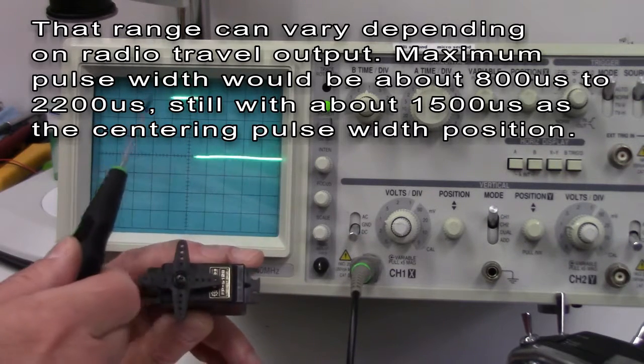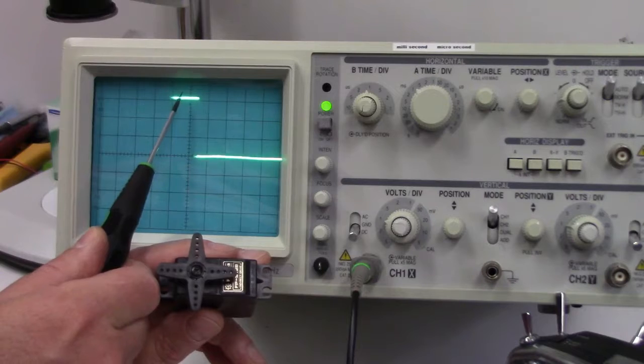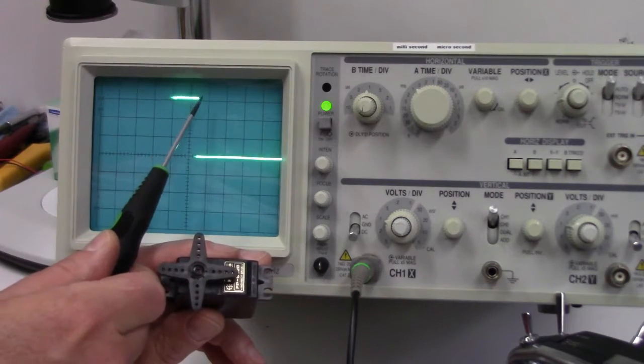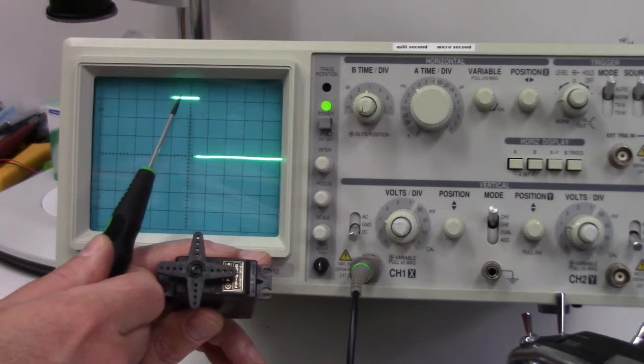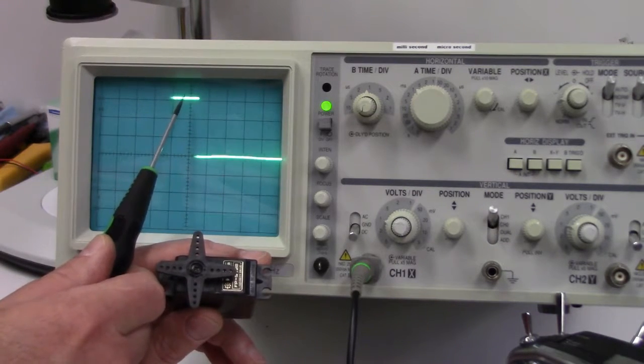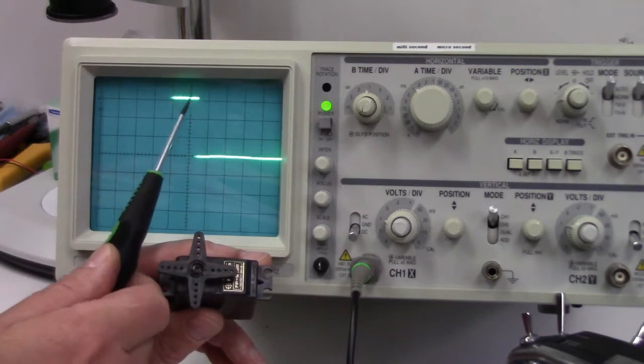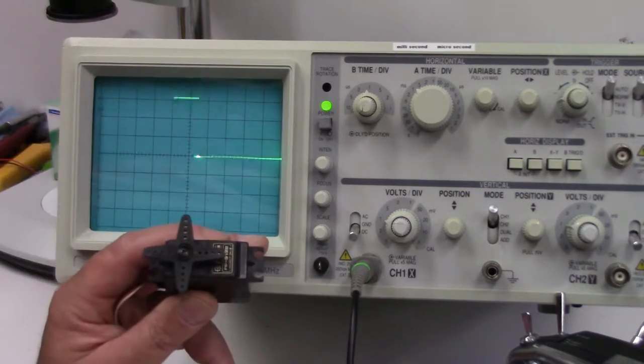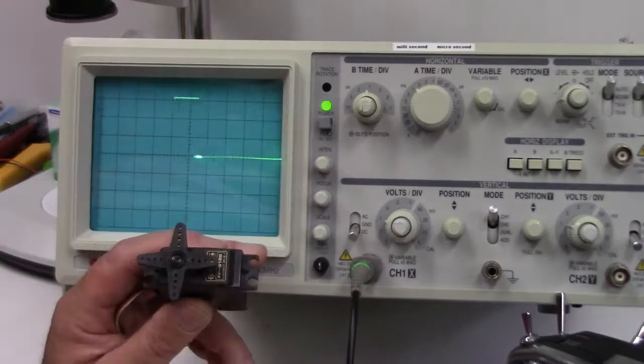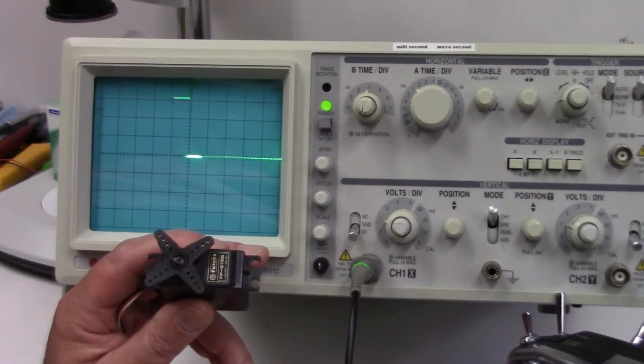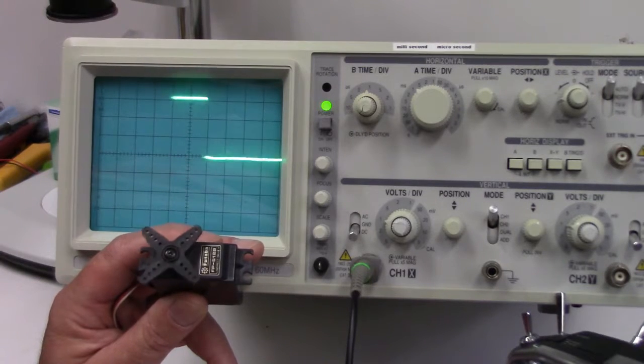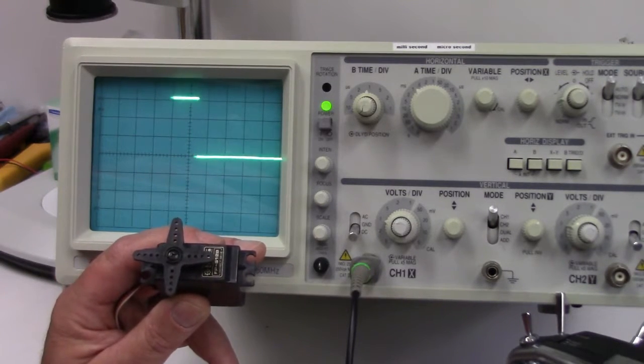So at this scale, we'd expect to see that line basically go between the full travel of that block. 1,500 being in the center, 1,000 being on the far left of the block of the grid line, and 2,000 on the far right. And that is exactly what we're getting.